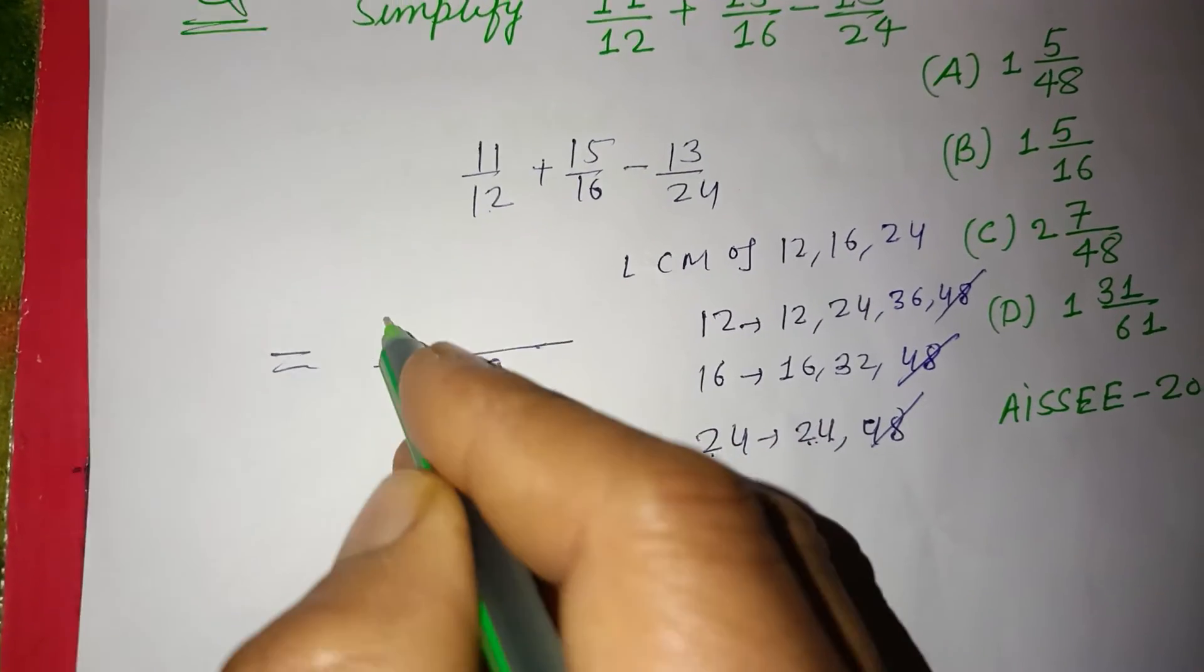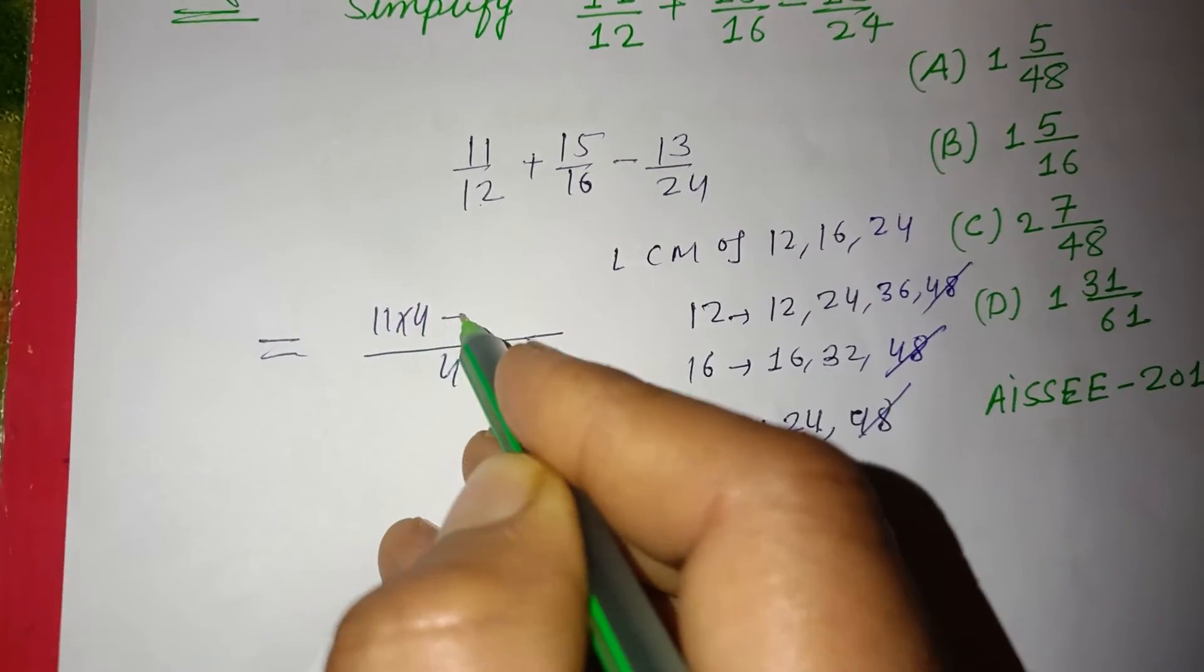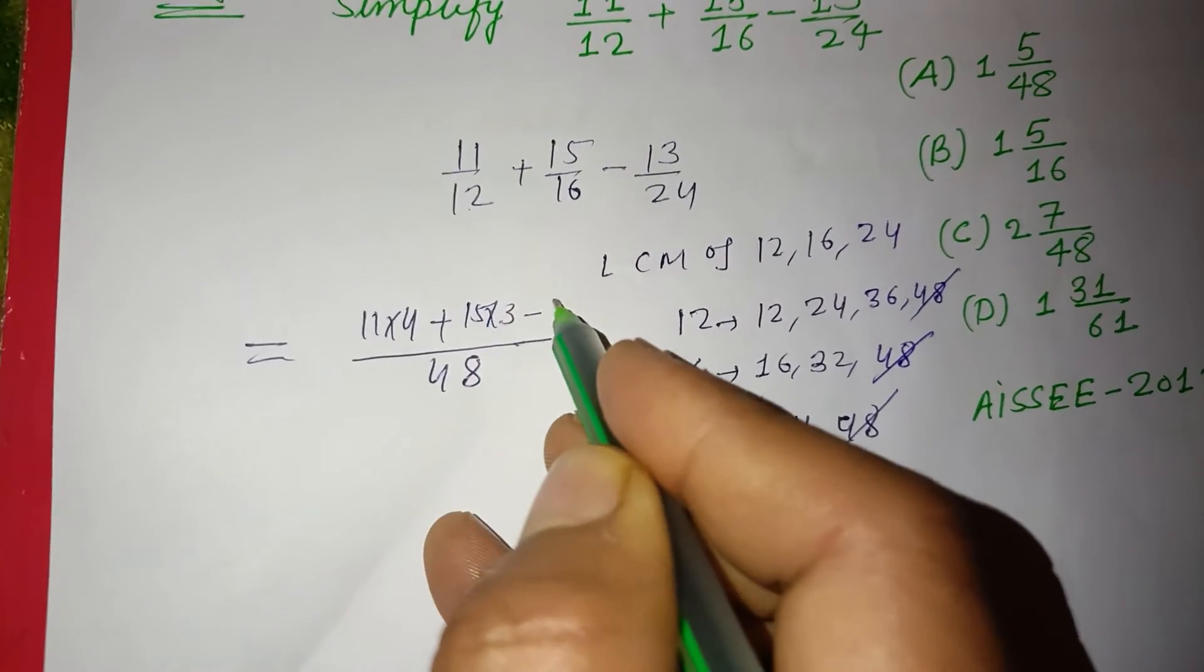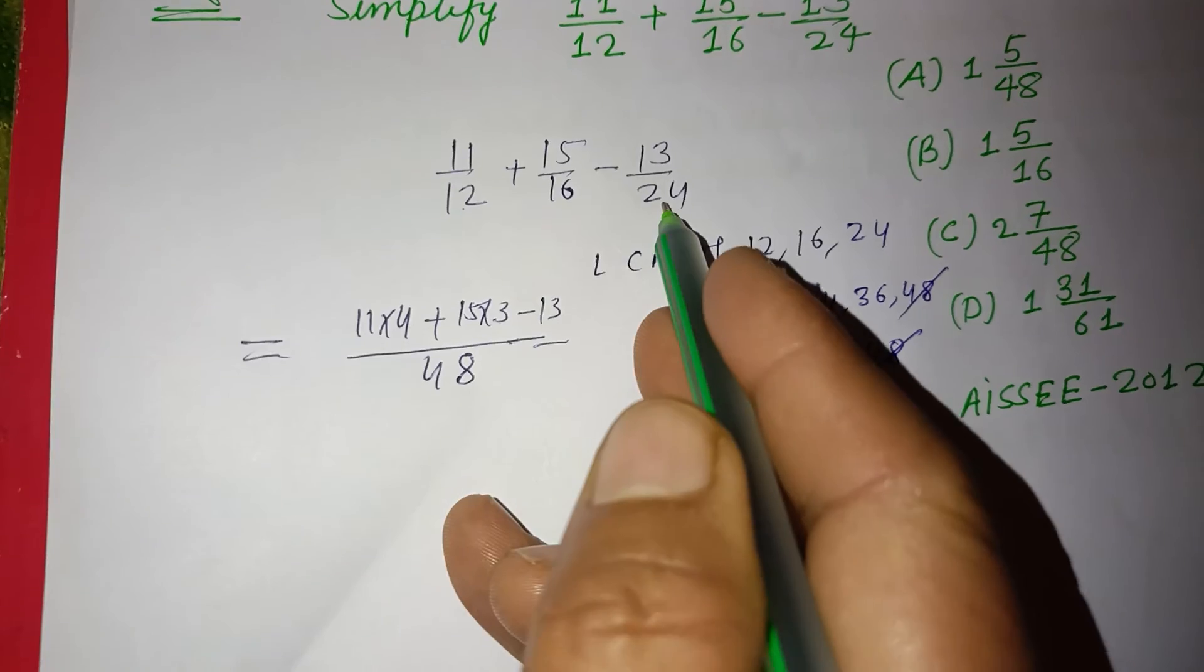12 times 4 is 48, so 11 times 4. 16 times 3 is 48, so 15 times 3. 24 times 2 is 48, so 13 times 2.